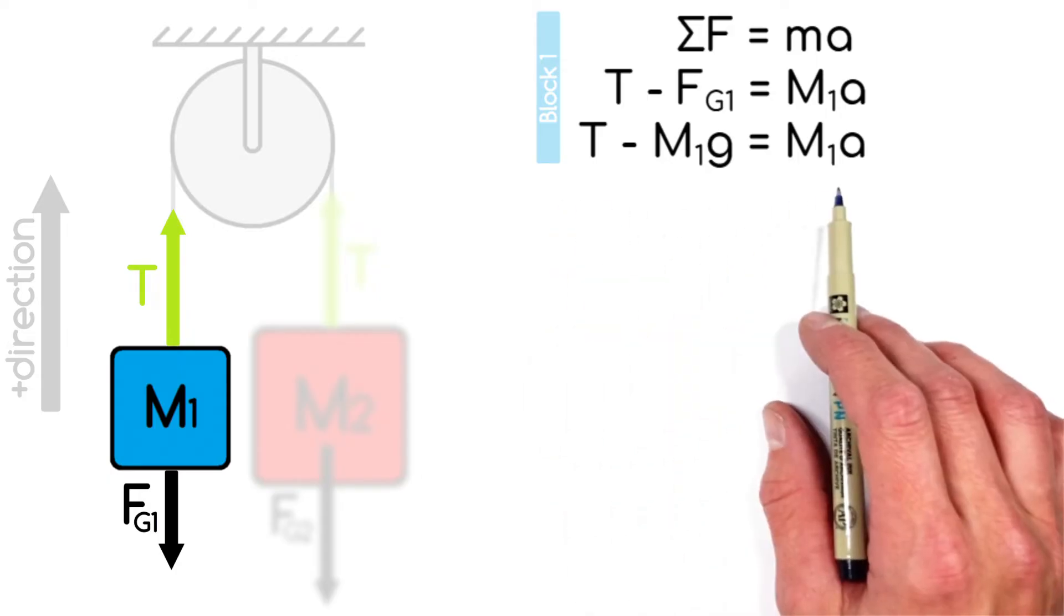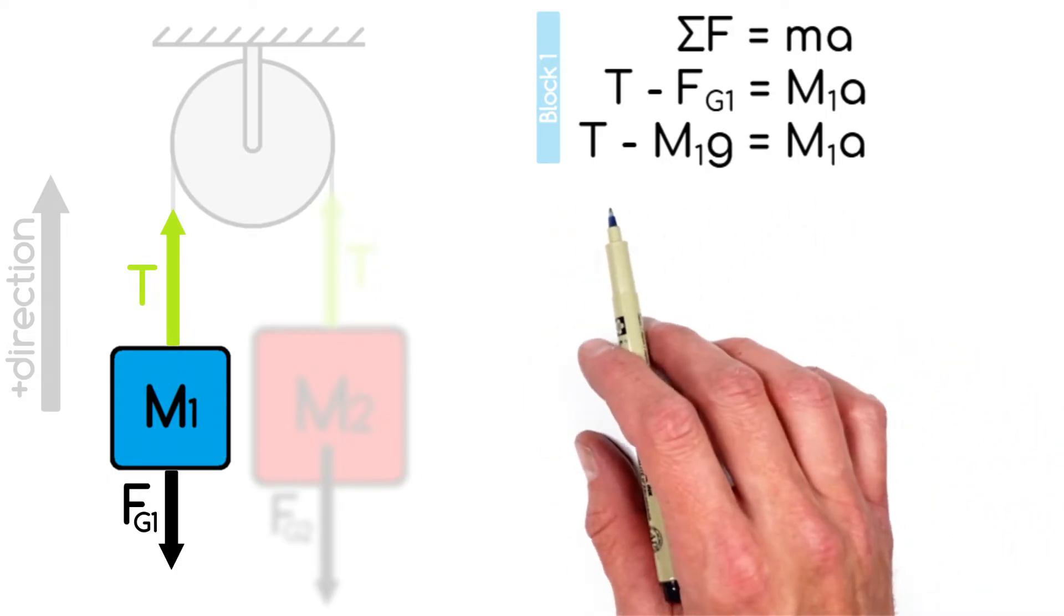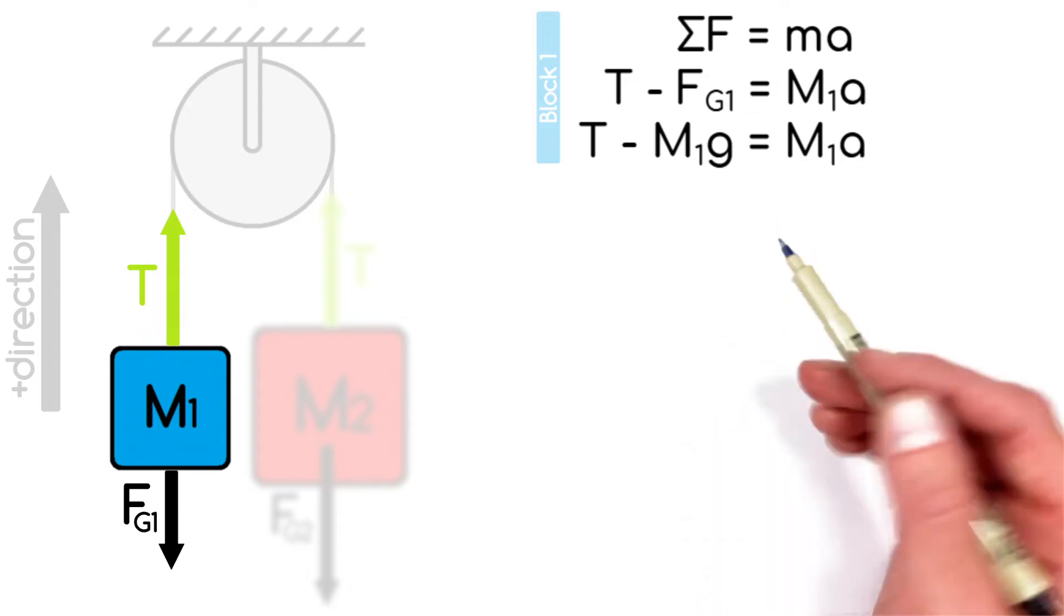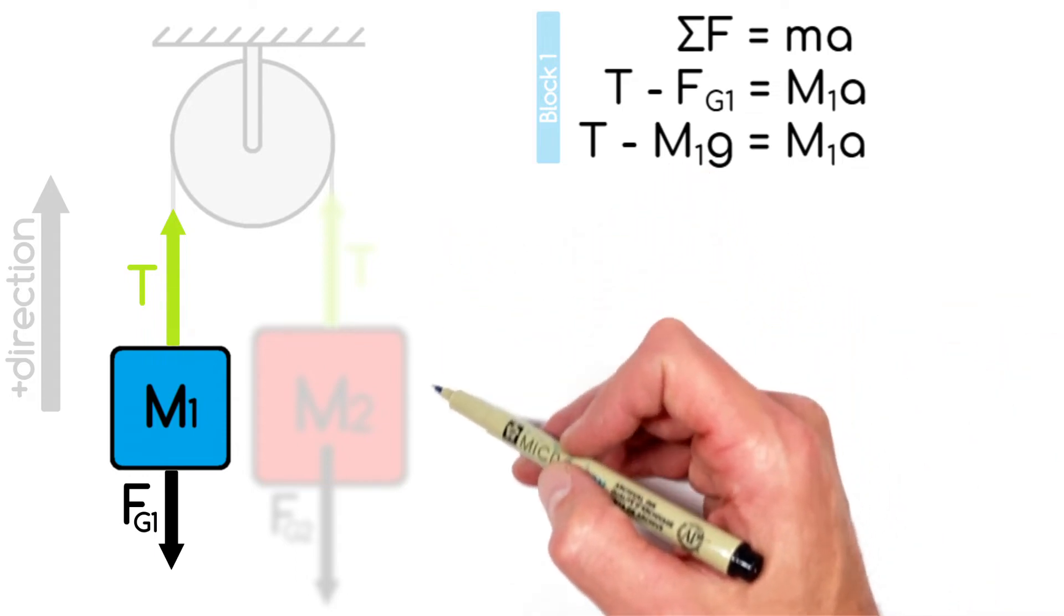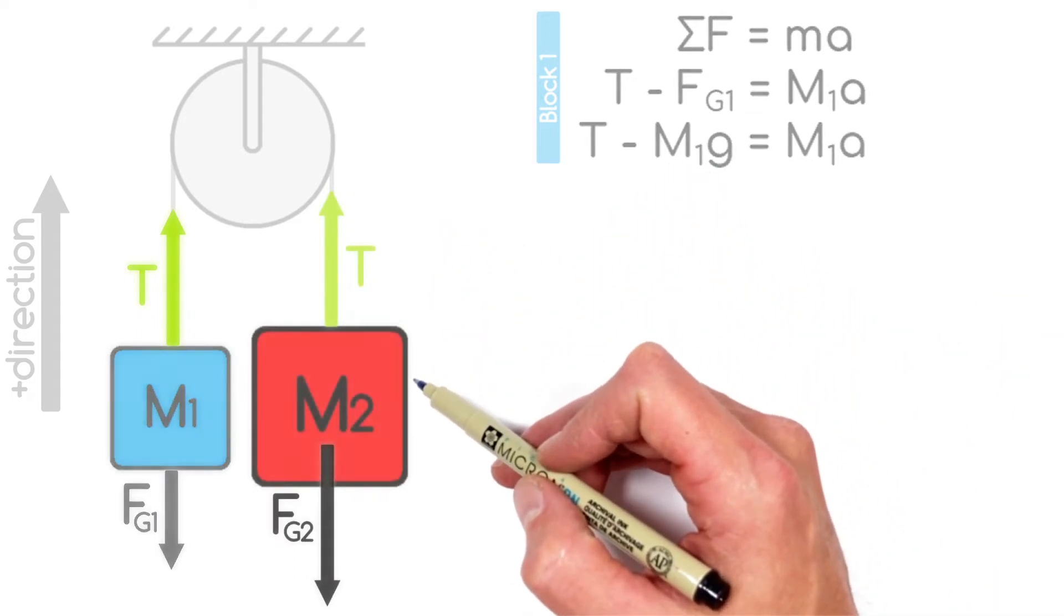Now if you approach this as though you're in math class, a single equation in two unknowns can't be solved. So what we're going to need to do is look at this other object or this other block.